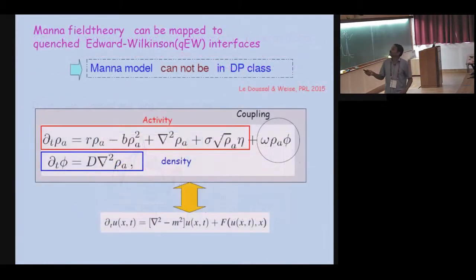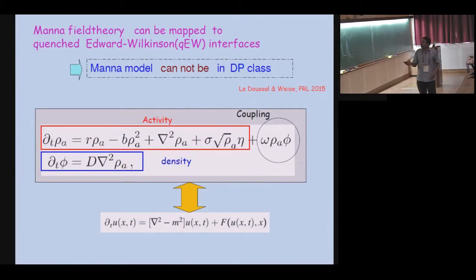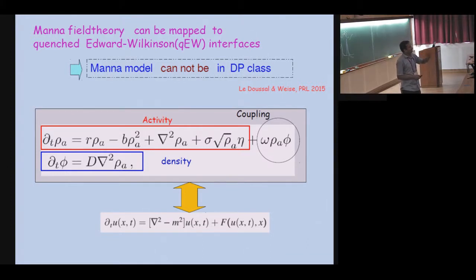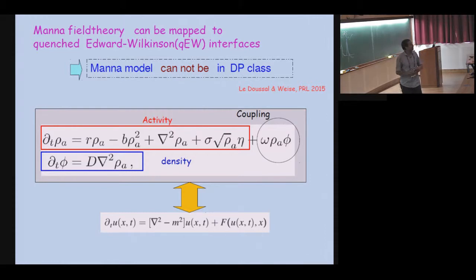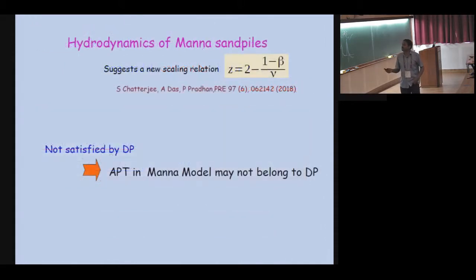Recently people find that critical absorbing states — not just sand piles but all critical absorbing states — are hyperuniform. This idea gained support around 2015. Then there are other works using field theory: you have an activity field like directed percolation, plus a conserved background field with some coupling. That gives the equation for what is called the Manna class. A recent paper actually maps the Manna class to something called the Edward-Wilkinson model.